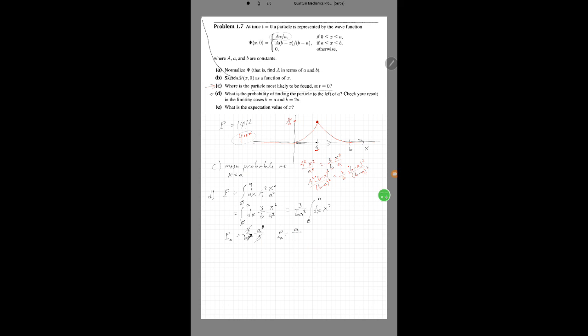So I get A cubed over 3. Half of my probability to find it to the left of A is just A over B. So looking at the literal interpretation of that, what is the probability to find it to the left of A?